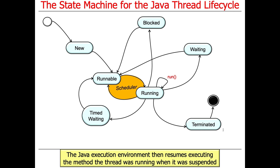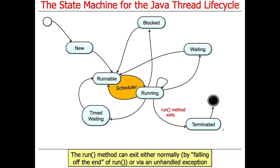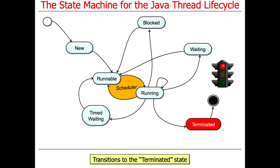At some point, the run method ends. A thread stops running either by gracefully falling off the end of run when done, or by being kicked out of run when an uncaught exception occurs. In either case, you're no longer running. The thread transitions to the TERMINATED state, where it's effectively no longer needed. At some point the memory can be reclaimed. If you check the thread and ask isAlive(), it will return false.